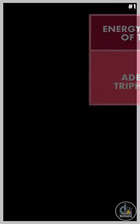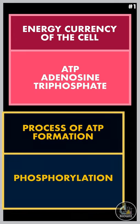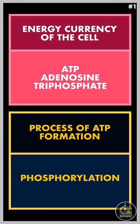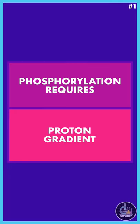Most of us know that the energy currency of the cell is ATP, or adenosine triphosphate, and the process of ATP formation is called phosphorylation. But you might not know that the main driving force for ATP formation is a proton gradient.